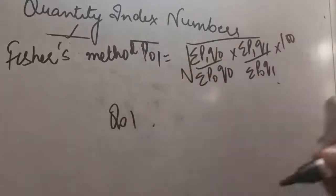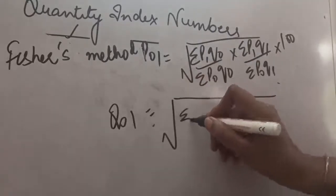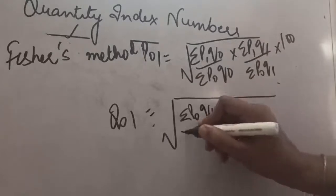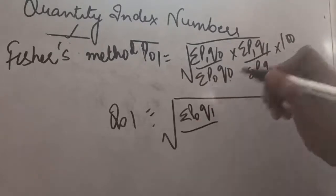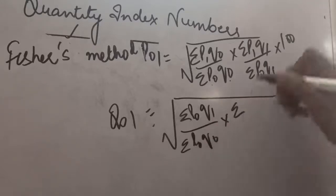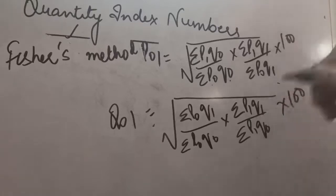Now, if I have to create Quantity Index from here, what will I do? Sigma, here it will be Q1 P0. But, I will be writing P0 in the front. It will be Q0 P0. So, I will be writing P0 in the front. It will be Q1 P1. But, I will write P1 in the front. It will be Q0 P1. Like this. Now, the same formula has been converted into the Quantity Index.